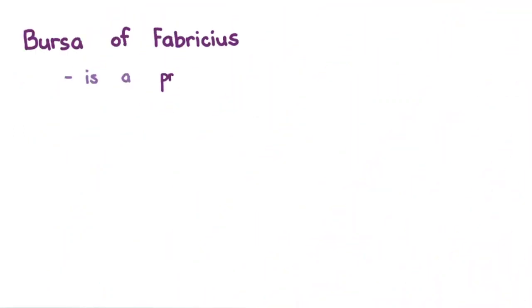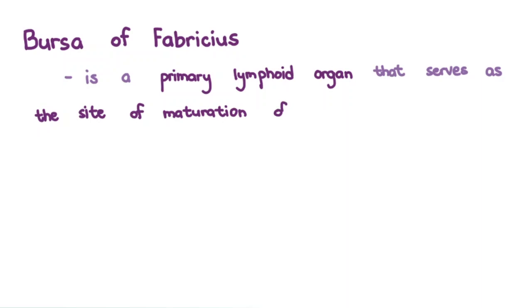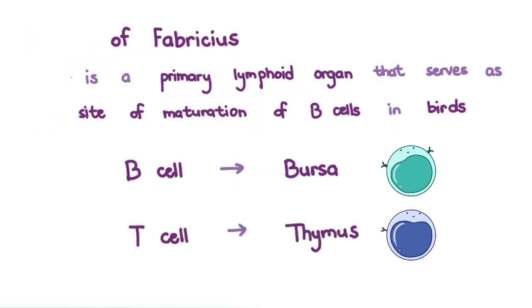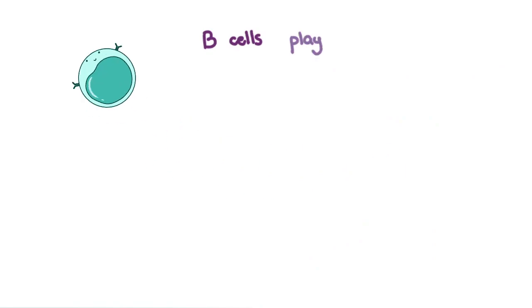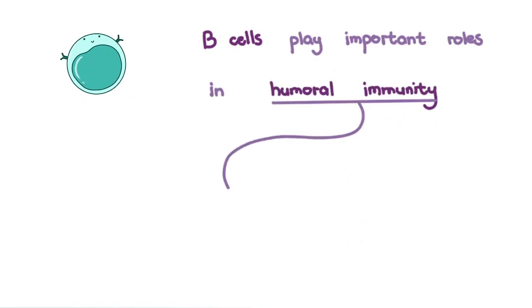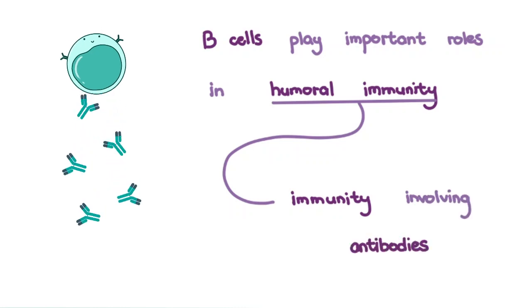It is a primary lymphoid organ that serves as the site of maturation of B cells in birds. The B in B cells refers to bursa, after all, as opposed to the T in T cells for the thymus. B cells play important roles in humoral immunity, that is, immunity involving antibodies.